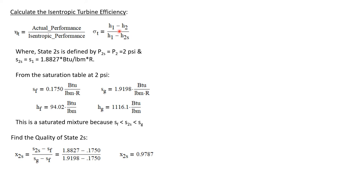The isentropic efficiency allows us to compare the real performance of a turbine to its idealized form. The equation is: efficiency equals (H1 minus H2) divided by (H1 minus H2S). The isentropic end state is called state 2S. The pressure at state 2S is the same as state 2, which is 2 psi. And S2S equals S1, meaning it's 1.8827 BTU/(lbm·°R), since the isentropic process maintains constant entropy.